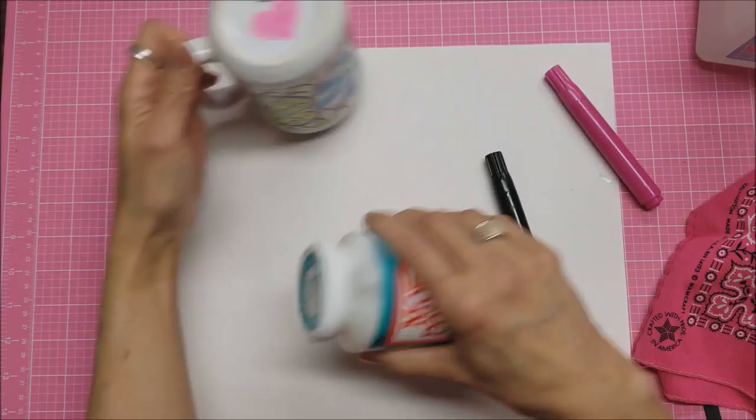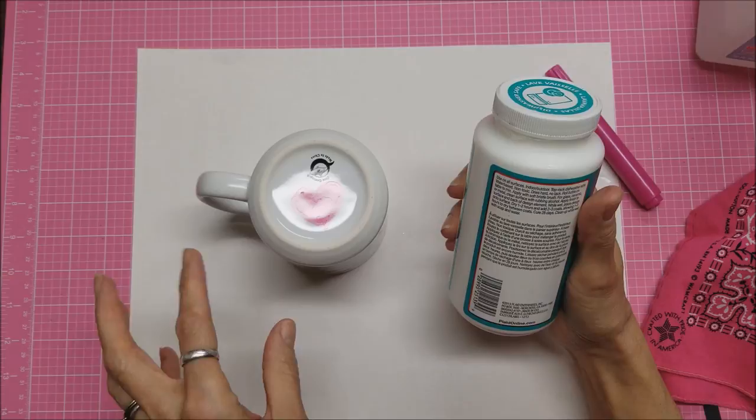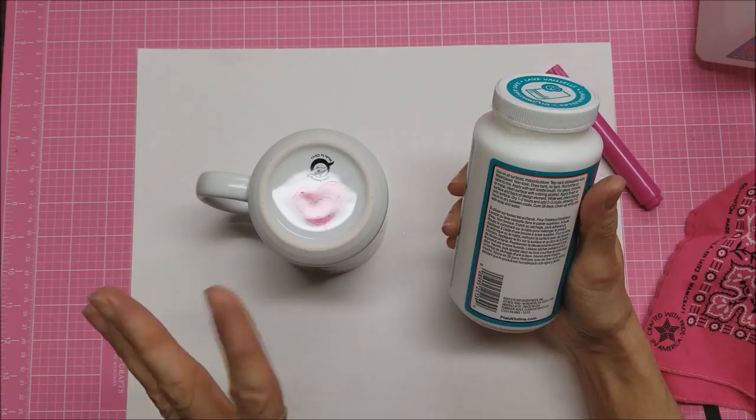In order to mix this you just roll it on the table like this. You don't shake it up because you don't want bubbles. You apply it with a soft brush. After you do a coat you let it dry one to two hours, then you can do another coat, letting it dry one to two hours in between coats. You can add a total of two to three coats.